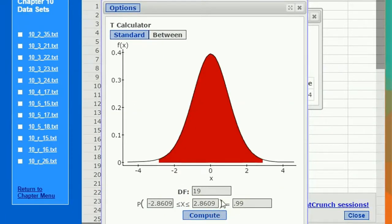Click compute, and we're going to get cutoffs that leave 1% split between the two tails, 2.86. So this is asking for the two critical values.